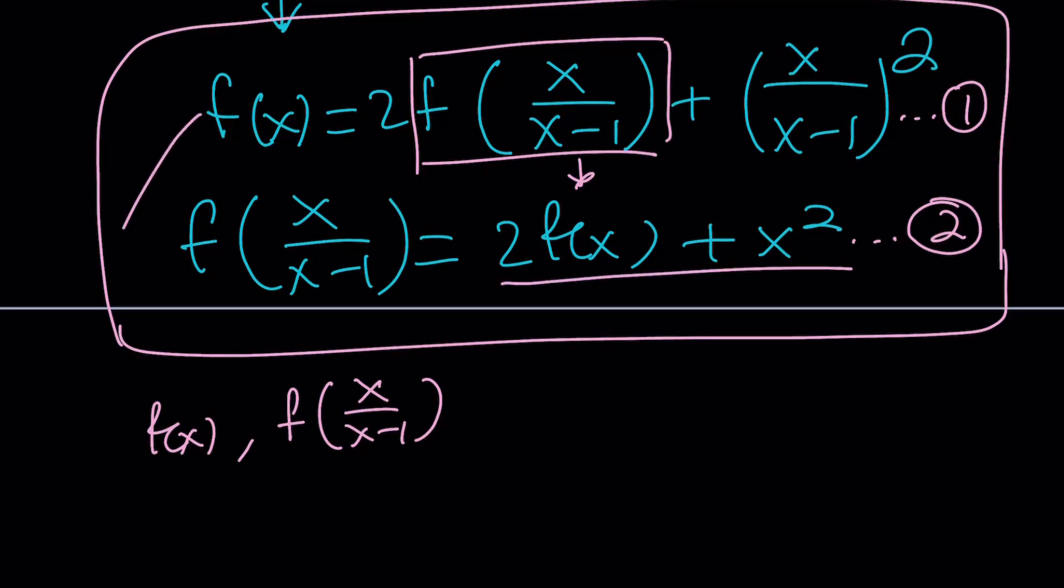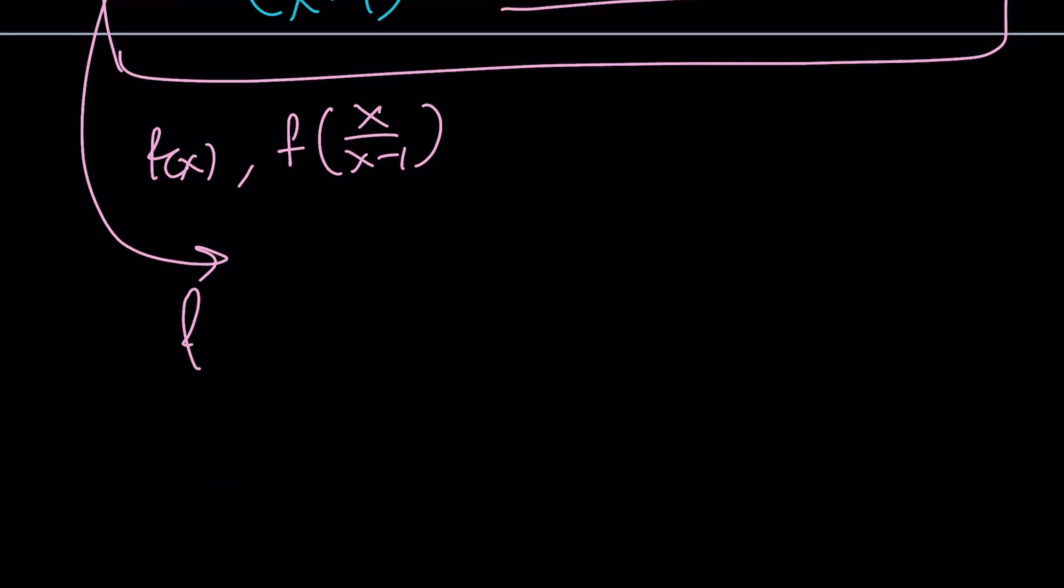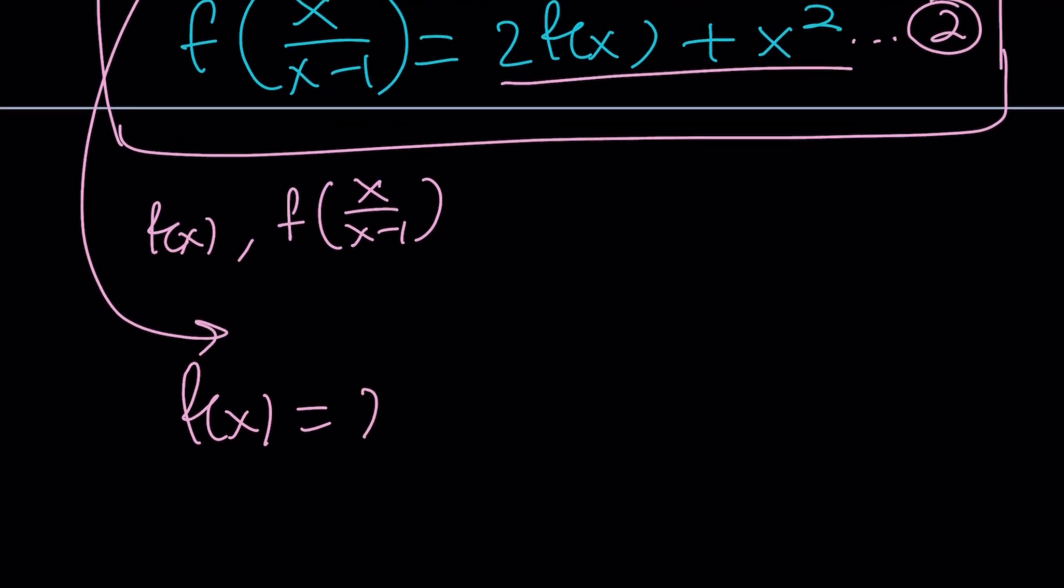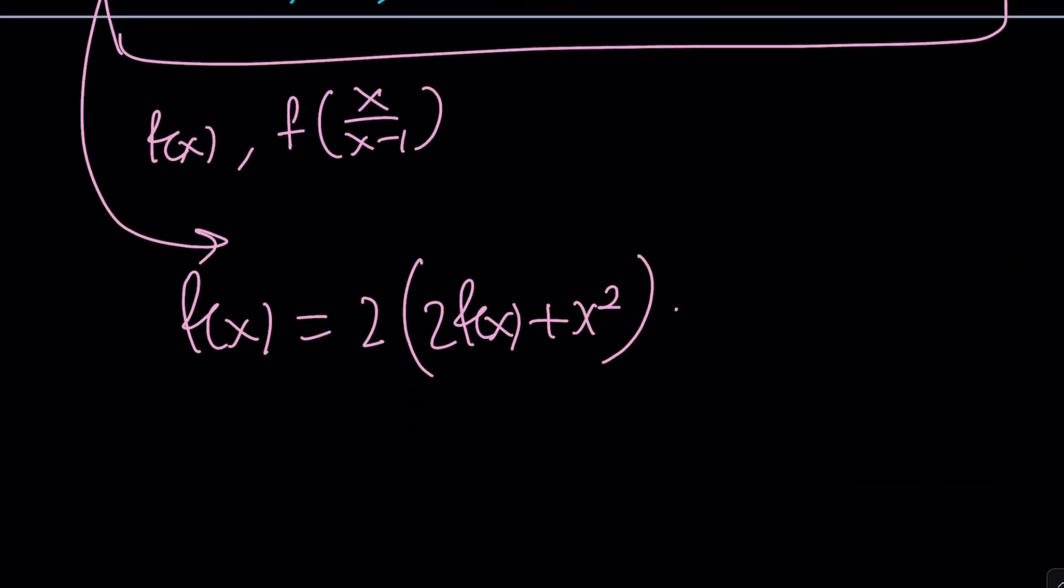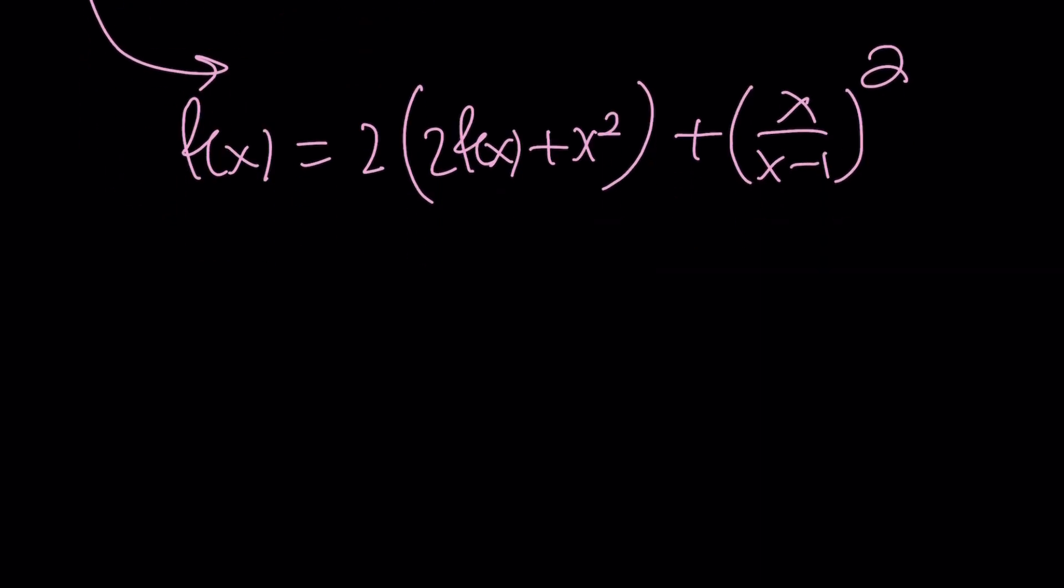So, I'm basically replacing f of x over x minus 1 with this thing. Easy, right? So, let's go ahead and work off of the first equation. We're going to get f of x equals 2 times f of x over x minus 1, which is 2 f of x plus x squared. That was easy. Plus x over x minus 1 squared. Great. So, we're almost there.